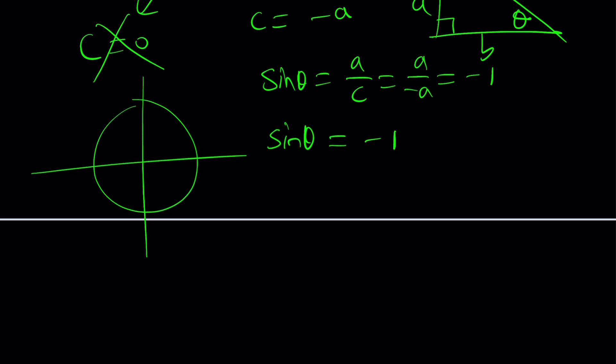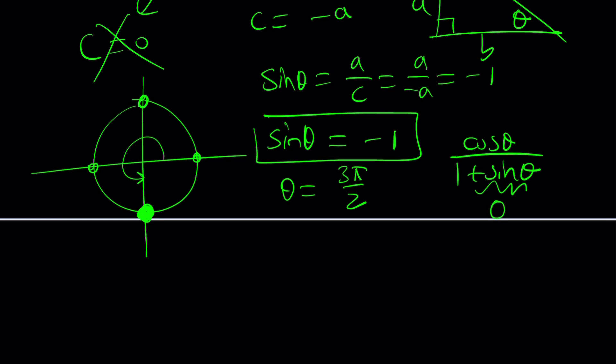Sine is 0 at 0 and pi, and it is 1 here and it's negative 1 here. Obviously, this is what we're looking for. That is 3 pi over 2. And if theta is 3 pi over 2, that's not good. Why is it not good? Because if you think back to the original problem, if sine theta is negative 1, Houston, we have a problem. The denominator is 0 and that's not acceptable. So there are no solutions at this point.